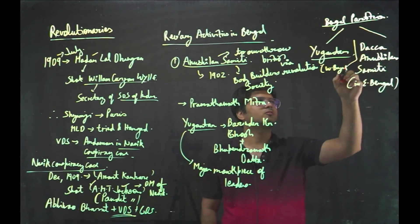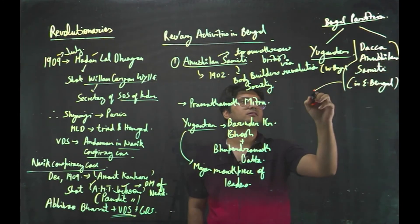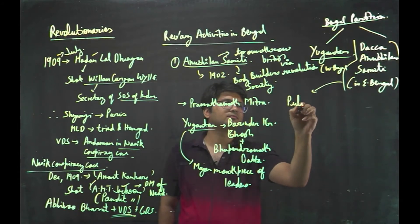After Bengal partition, this Anushilan Samiti got divided into two. Yuga Antar in West Bengal and Dhakka Anushilan Samiti in East Bengal. So, now we talk about the Dhakka Anushilan Samiti. It was started by Pullin Bihari Das.